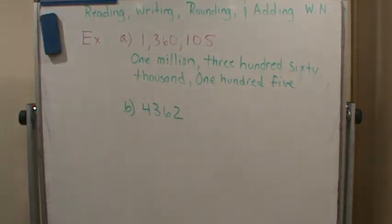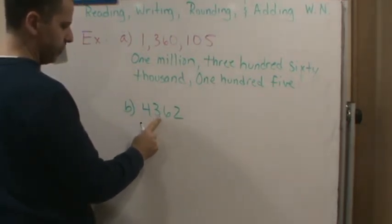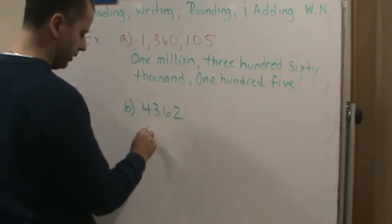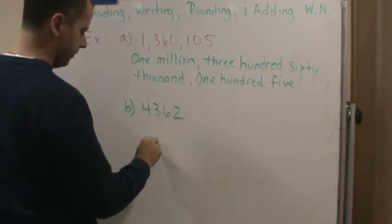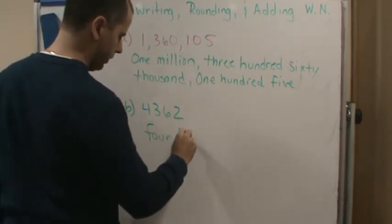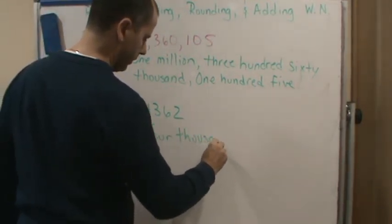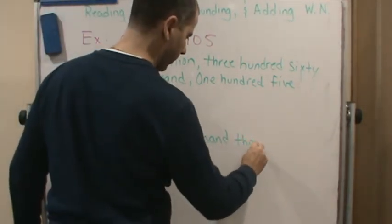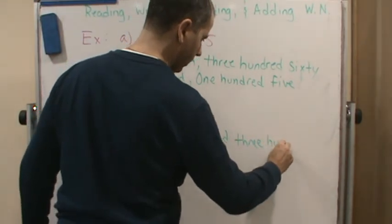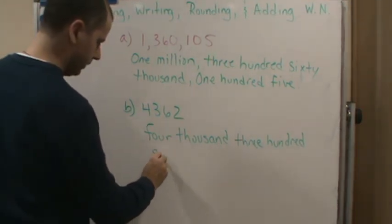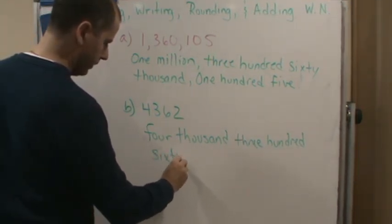And that's it. And then with B, this is four thousand three hundred sixty-two, so that's what we would write. We write four thousand three hundred sixty-two.